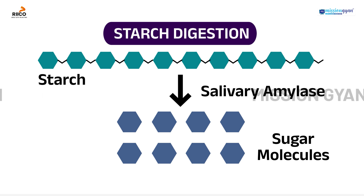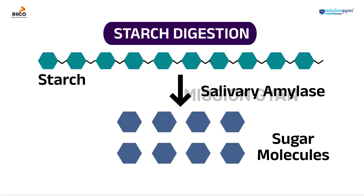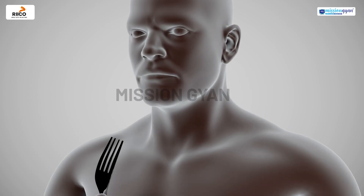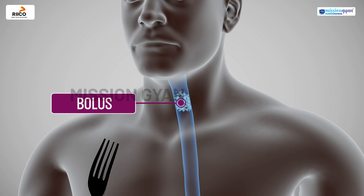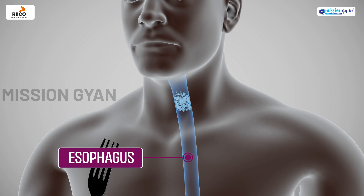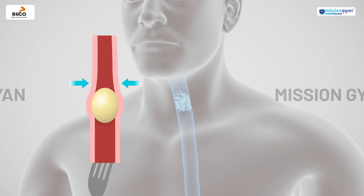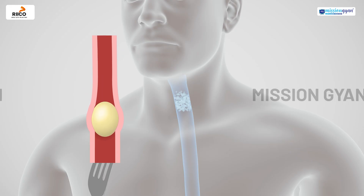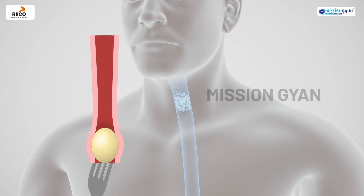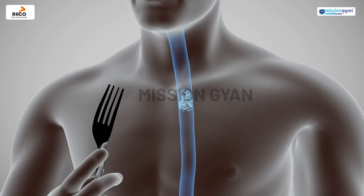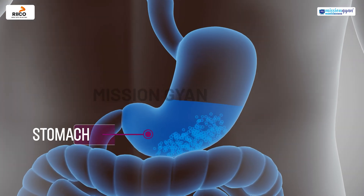This is the first step of chemical digestion. The chewed food is now called bolus which on swallowing moves into the esophagus. The esophagus uses rhythmic muscle contractions called peristalsis to push the food down to the stomach.